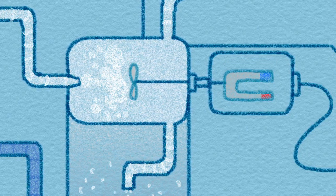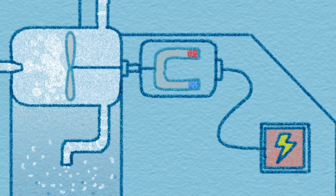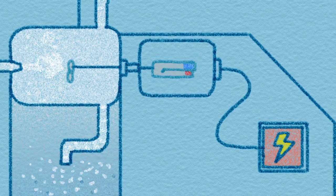In turn, these bladed rotors activate a magnet that generates the electric current. This magnet is part of a device known as an electric generator.